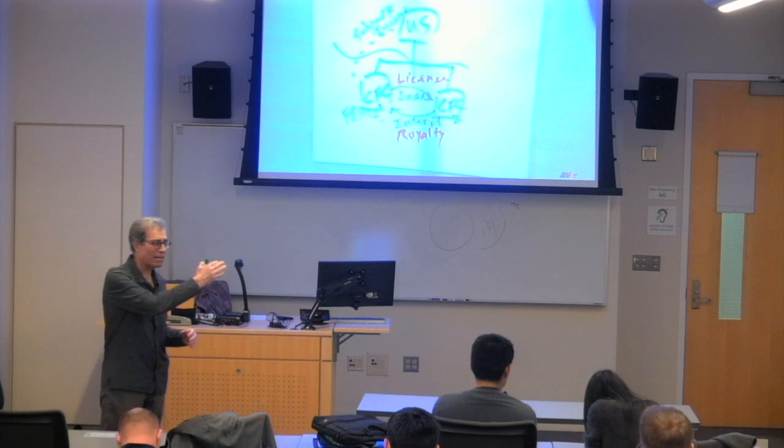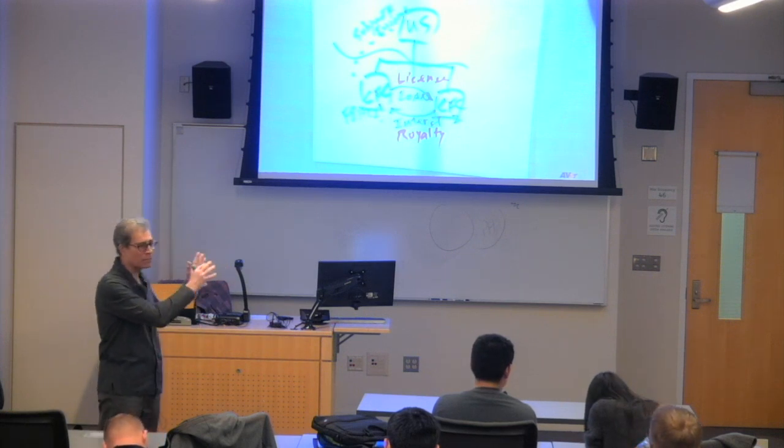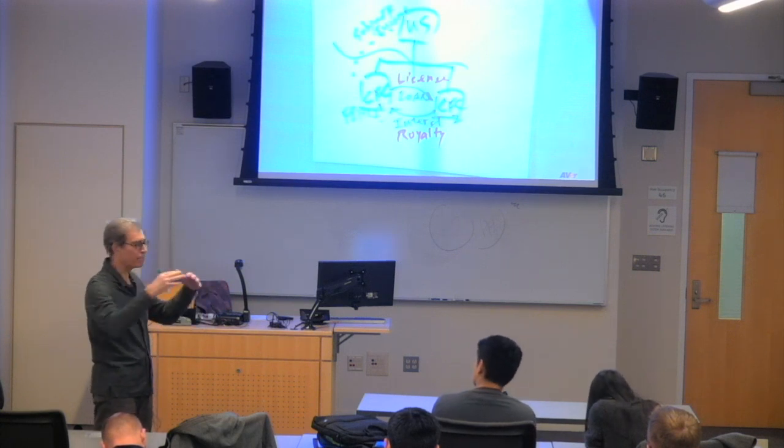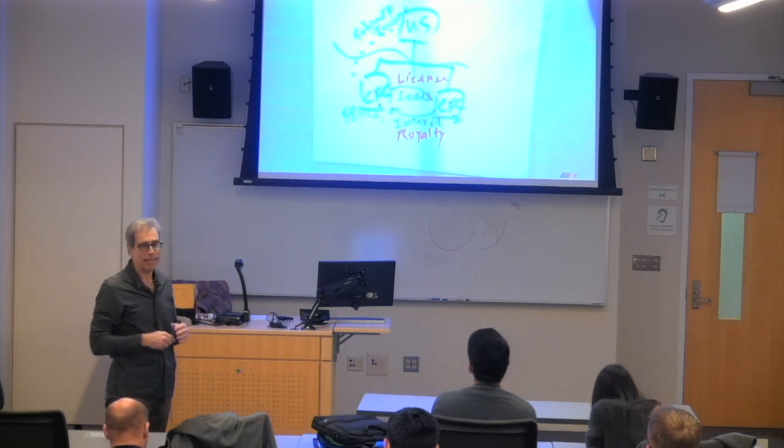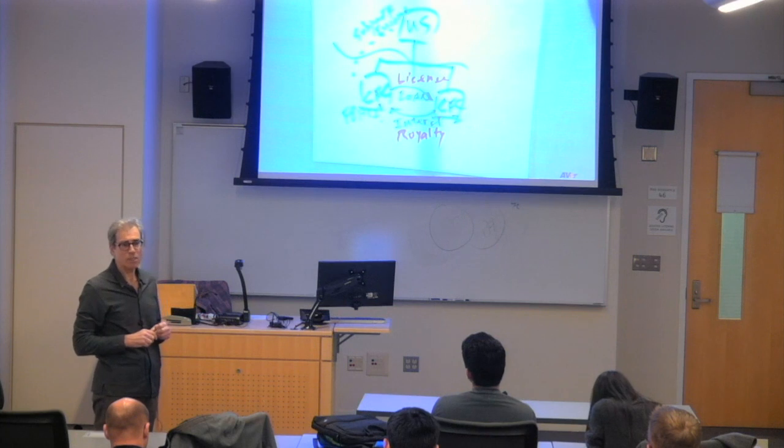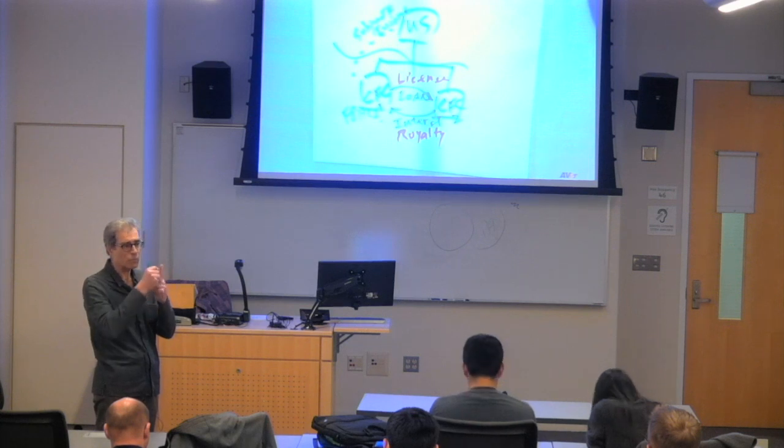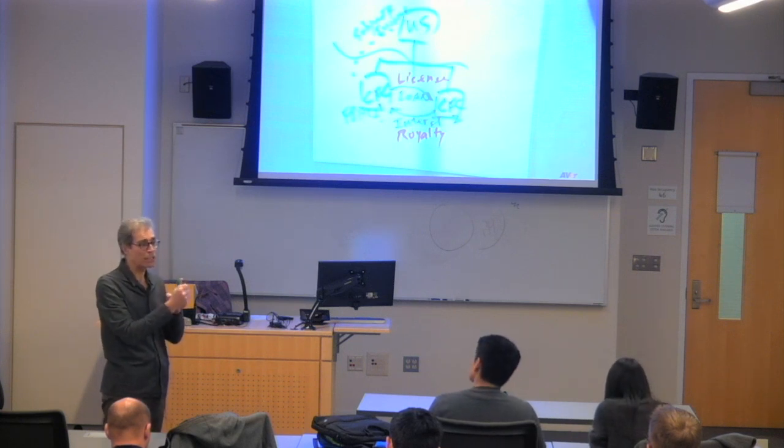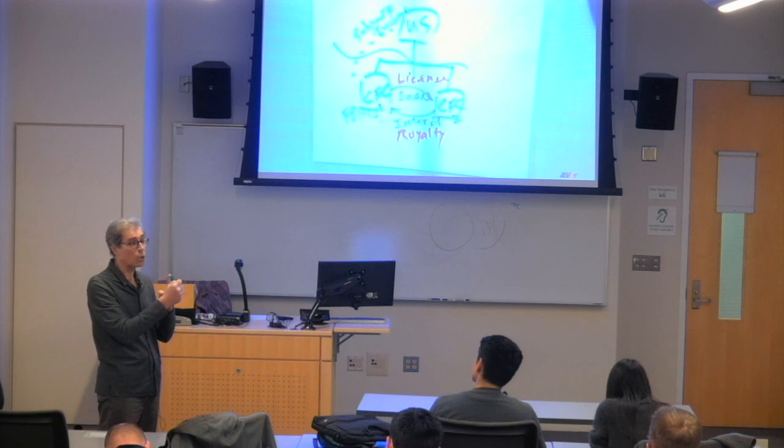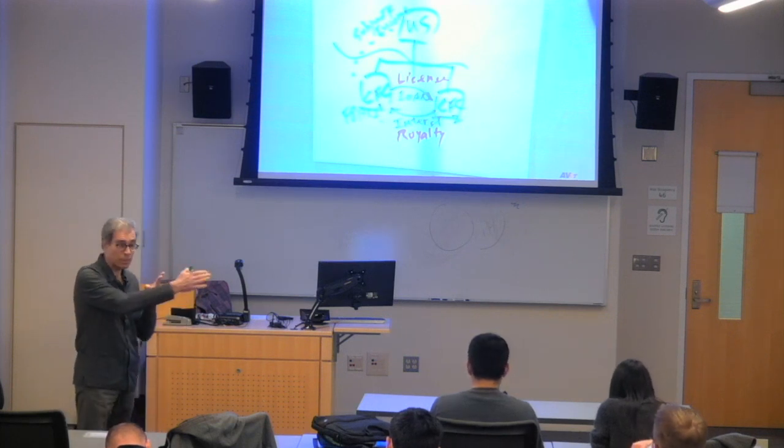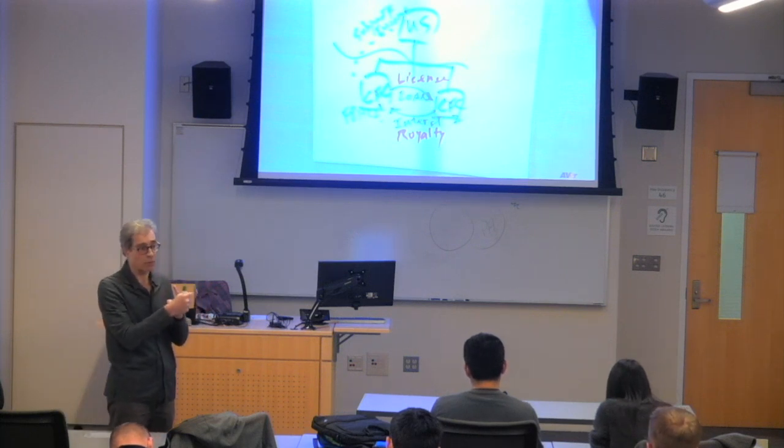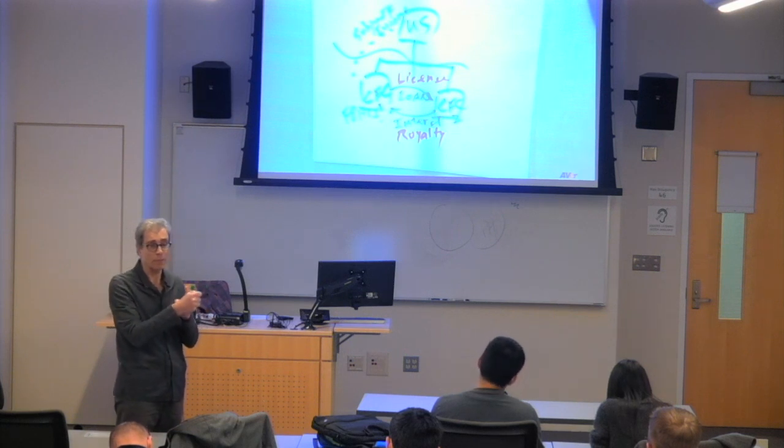So the point is that there's an attempt, and you're going to see this through the project that you're doing on these various multinationals that you've chosen. You're going to see that the structuring that they've done has had two objectives. One, of course, is to maximize the amount of income outside the United States so that there will be no current U.S. tax. And, of course, before the recent Tax Cuts and Jobs Act, maximize the benefit of deferral, which we've talked about a few sessions ago.